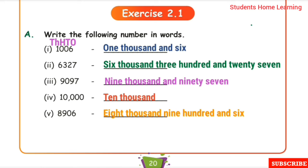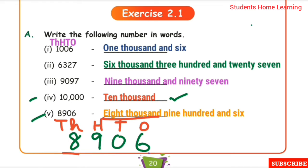Next one: 10,000. This number is ten thousand. Next one: 8,906. Place values: thousands place 8,000, hundreds place 900, tens and ones place: 6. The answer is eight thousand nine hundred and six.